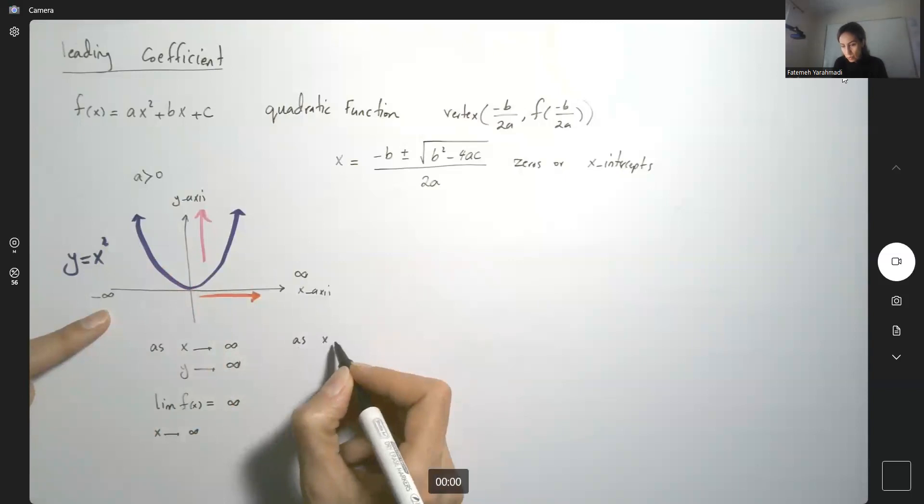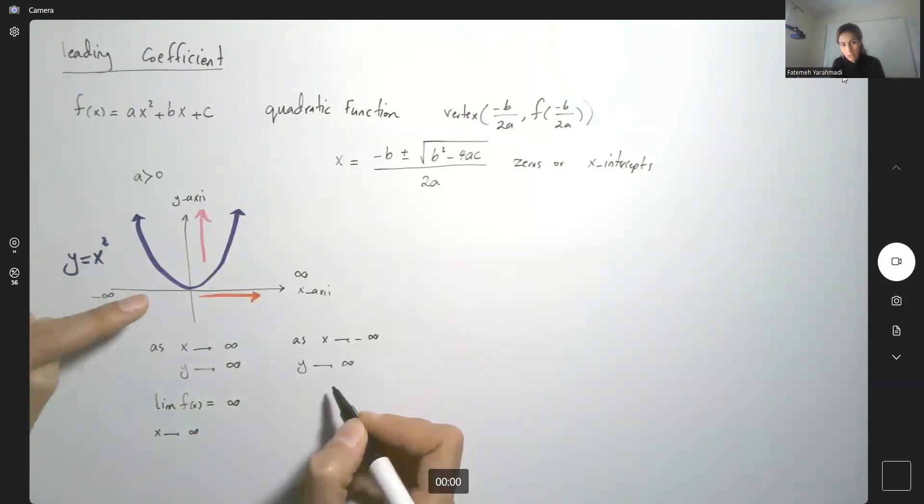Again, as x goes to negative infinity, your y goes to positive infinity. So we're going to write it this way: the limit of f of x as x goes to negative infinity is positive infinity. This is the concept of limit that you're going to learn in calculus later.